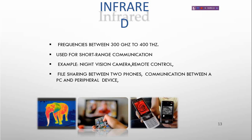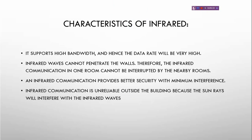The last type is infrared, with a frequency between 300 GHz to 400 THz. It is used for short-distance communication. Examples include night vision cameras, remote controls, file sharing between two phones, and communication between a PC and peripheral devices. Infrared supports high bandwidth and hence a very high data rate. Infrared waves cannot penetrate walls, so infrared communication in one room cannot be intercepted by nearby rooms, providing better security with minimum interference.